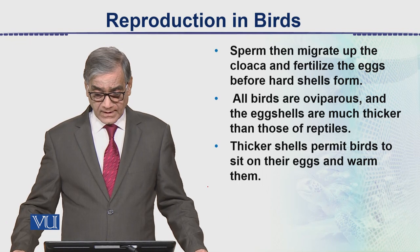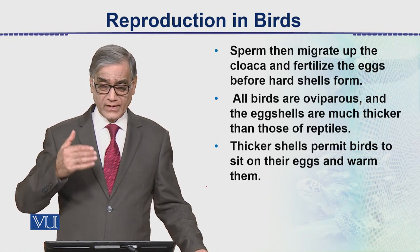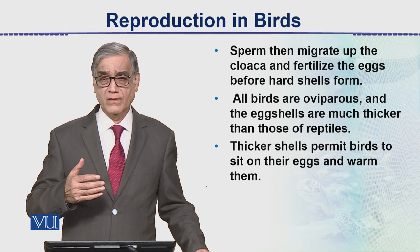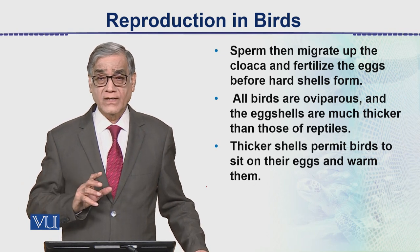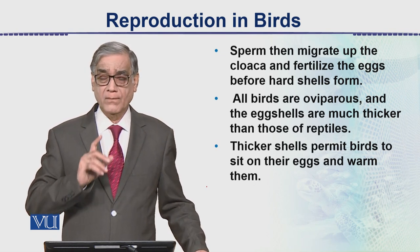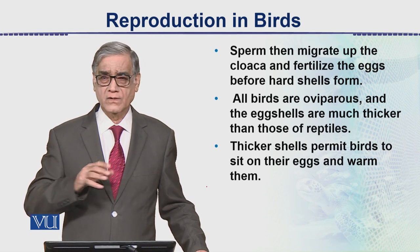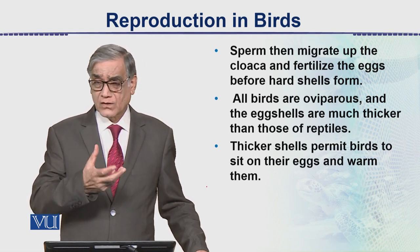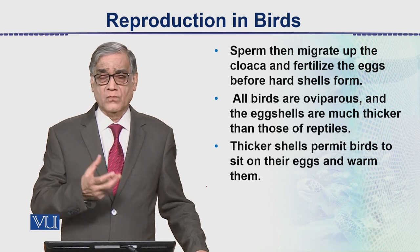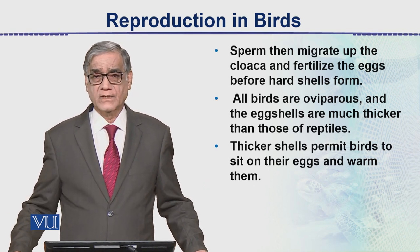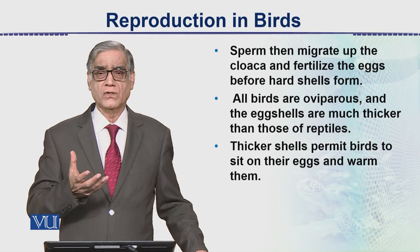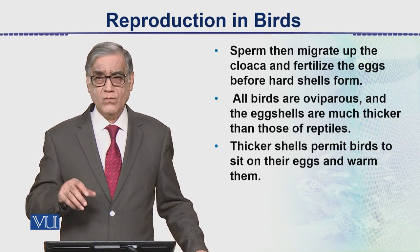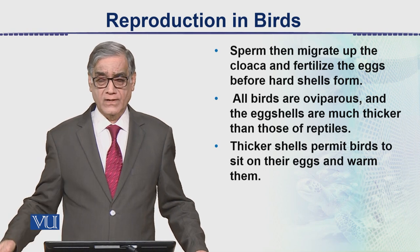When the sperm enter the body of the female, they travel up through the convoluted oviduct to a point very close to the ovary. At that point, the egg is released in the form of a yolk — a yolk surrounded by a membrane called the vitelline membrane.